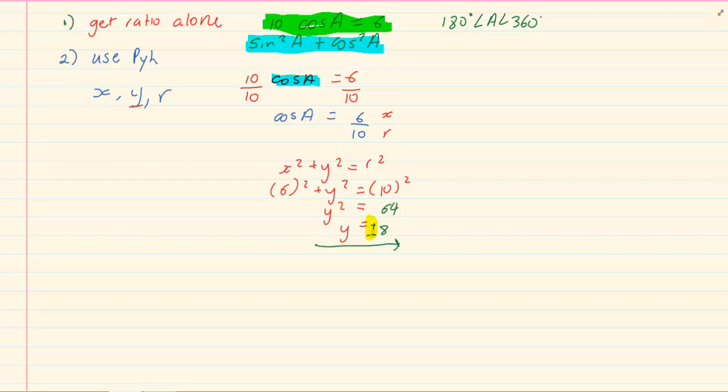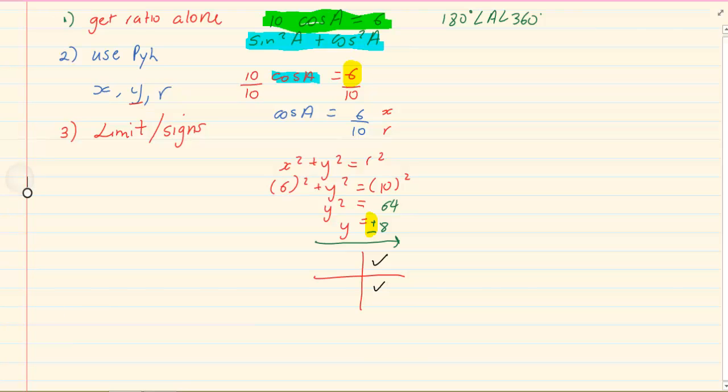Now I am emphasizing on the plus and minus because you will only decide once you look at your limit and you look at your signs. Now if you looked at the question, the question had a positive 6. Where is cos positive? It is positive in the first and in the fourth. Then look at our limit. We are running from 180 to 360 which is in the third and fourth. So the only quadrant we are working in is the fourth quadrant. Now the y value in the fourth quadrant is negative. So we know our y is going to equal to negative 8.